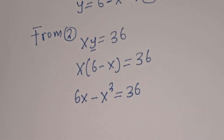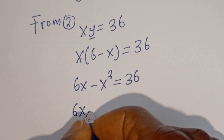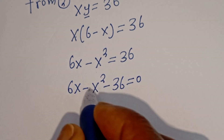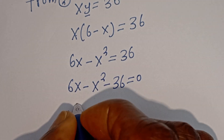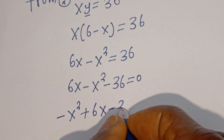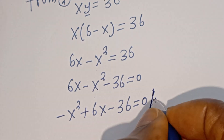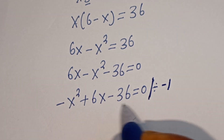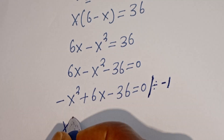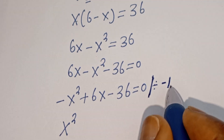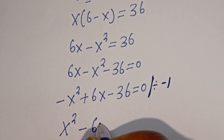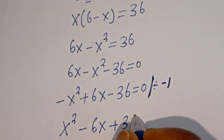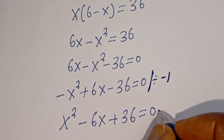Now this gives us 6s minus s squared is equal to 36. We rearrange: negative s squared plus 6s minus 36 is equal to 0. Let's divide all through by negative 1. Then negative s squared divided by negative 1 is s squared, plus 6s divided by negative 1 is negative 6s, plus 36 divided by negative 1. This gives us a quadratic equation.